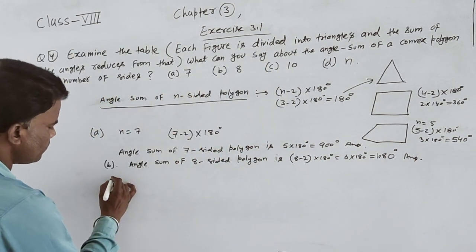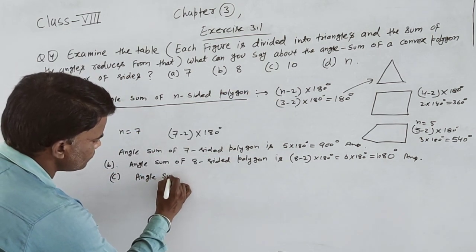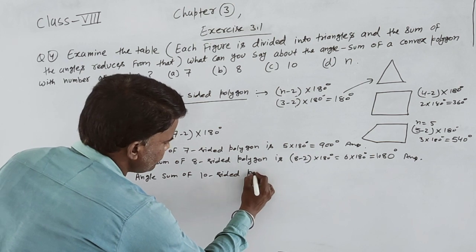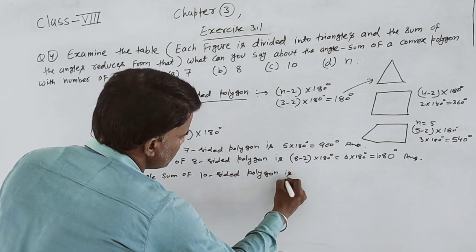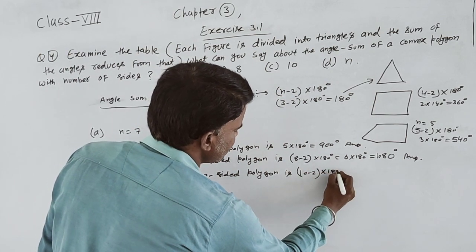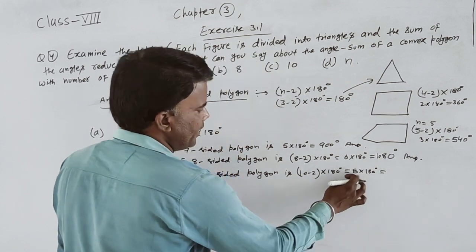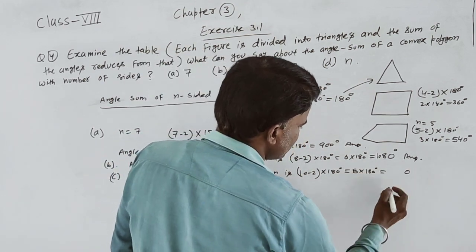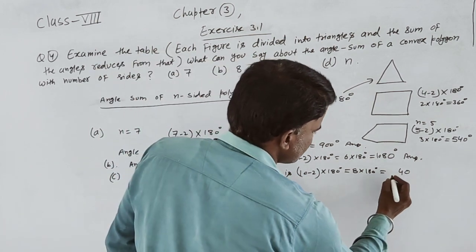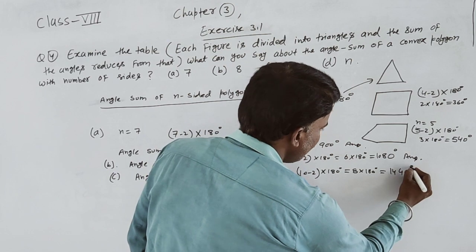C part में number of sides 10 है। 10 minus 2, multiply 180 — 8 multiply 180। Calculate करेंगे: 8×0=0, 8×8=64, 8×1+6=14 — 1440 degrees।